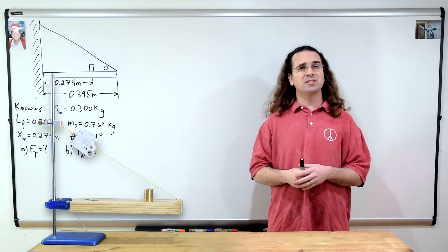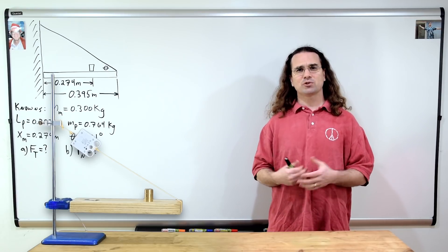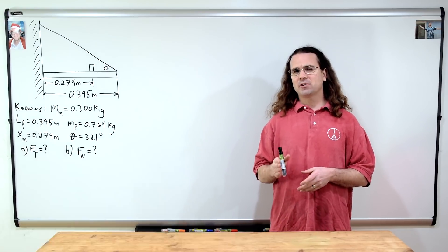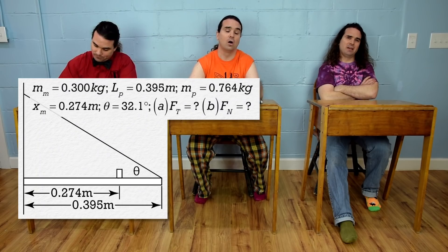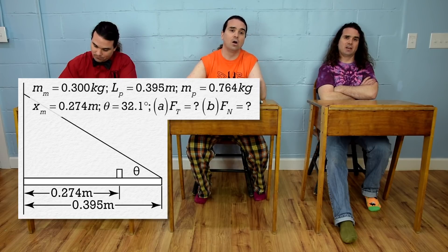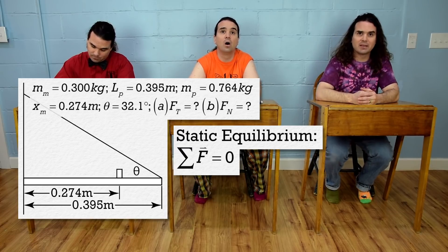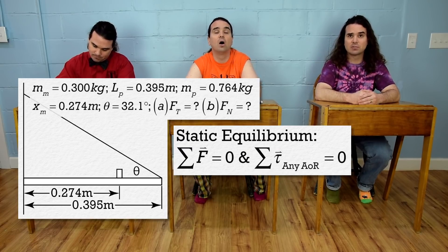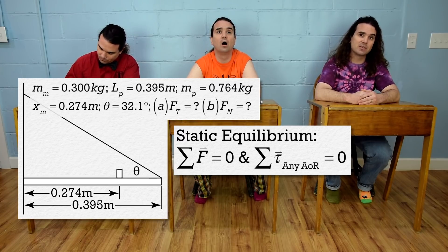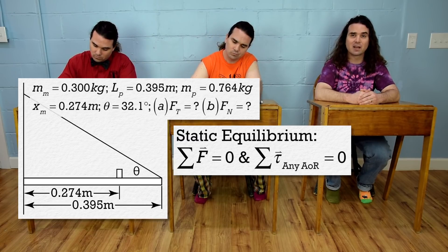Just so you know, we are going to demonstrate this and measure the force of tension in the string and the force normal caused by the wall. But first, let's solve the problem. Bo, please get us started. The plank is at rest and not rotating, so it is in static equilibrium. In other words, the net force acting on the plank is zero, and the net torque acting on the plank about any axis of rotation is also zero. So we are going to sum the forces and sum the torques, and we need a free body diagram of all the forces acting on the plank.